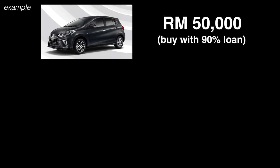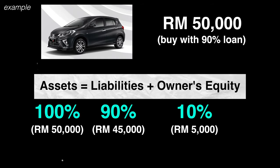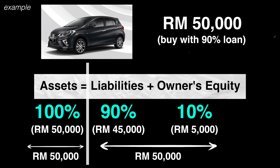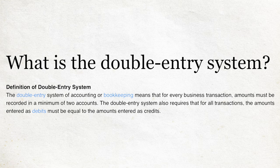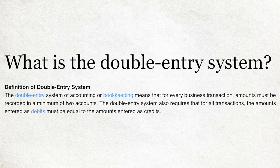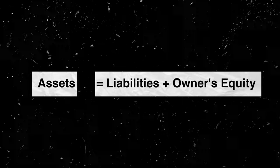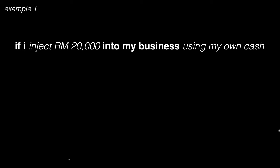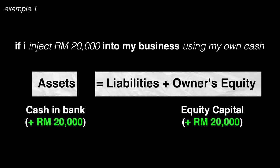For example, for a RM50,000 vehicle bought with a 90% loan — 90% of RM50,000 is parked under liabilities, 10% of RM50,000 is your own money parked under owner's equity, and their total will be RM50,000, which is the asset amount. Both sides are balanced at RM50,000. According to the double entry system in accounting, each transaction you incur must be recorded into at least two accounts — which is what you commonly hear as credit and debit. Looking at this formula, we can split them into two halves: the left is assets and the right is liabilities and owner's equity.